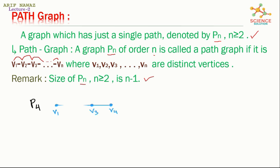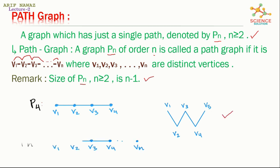For example, P_4 is the path graph of 4 vertices, P_5 is the path graph of 5 vertices, and P_n is the path graph of n vertices, as shown in the diagram.